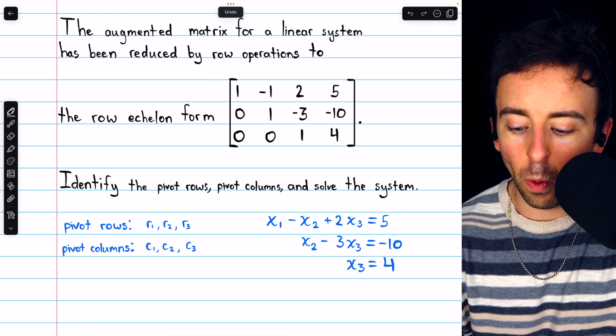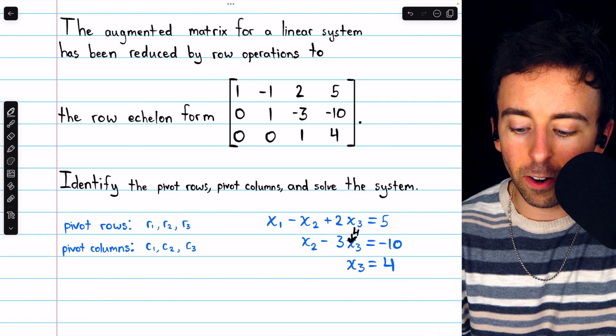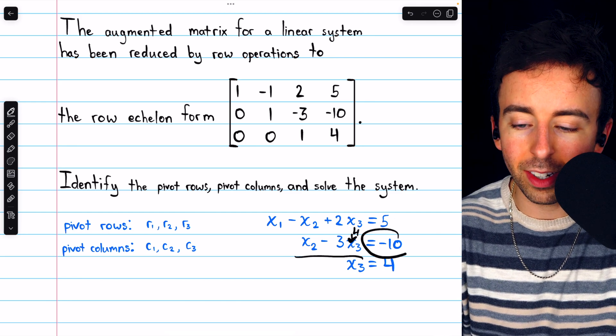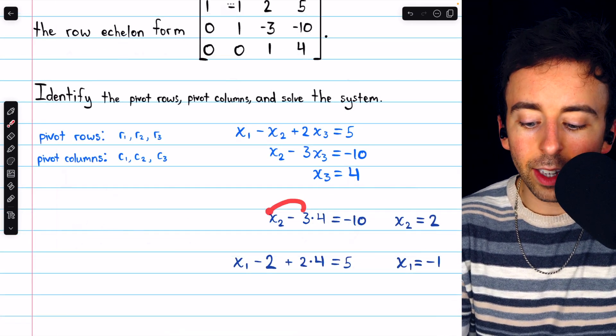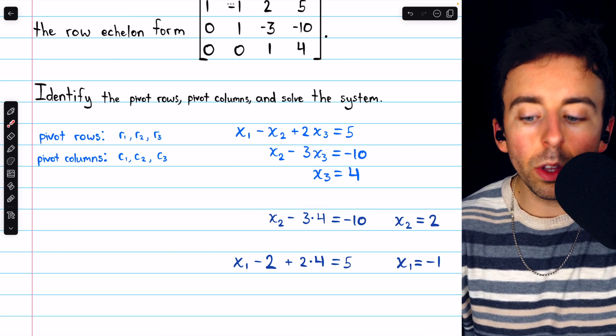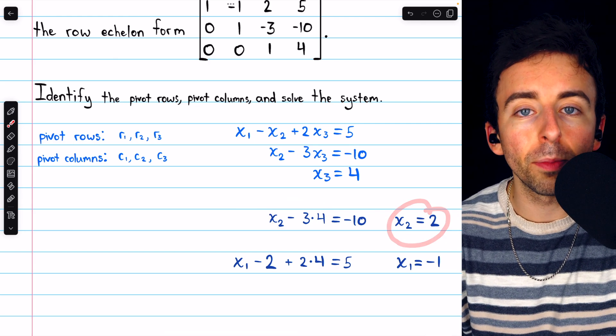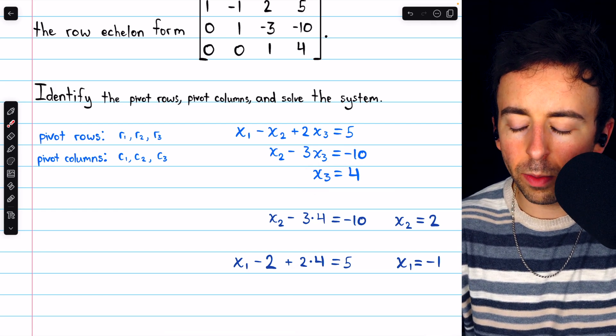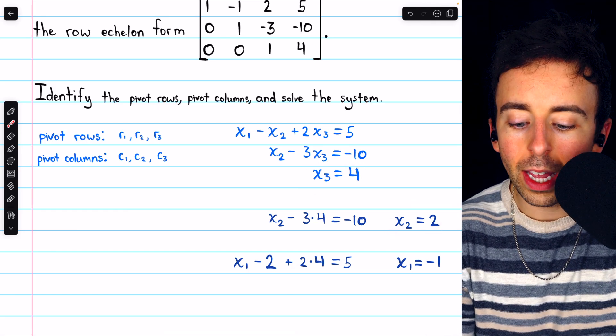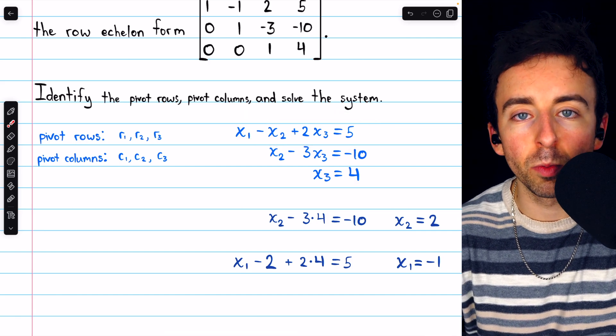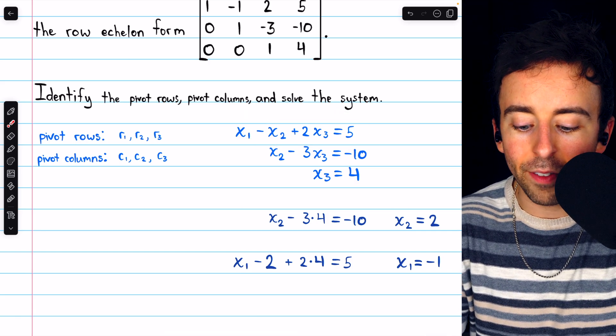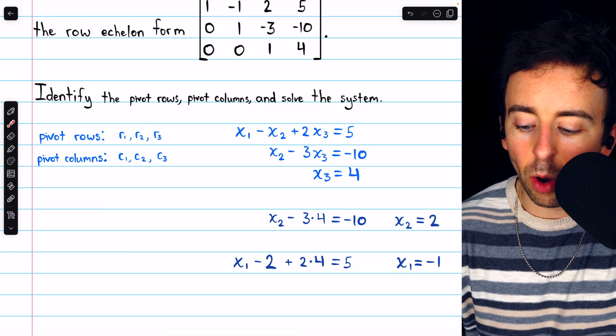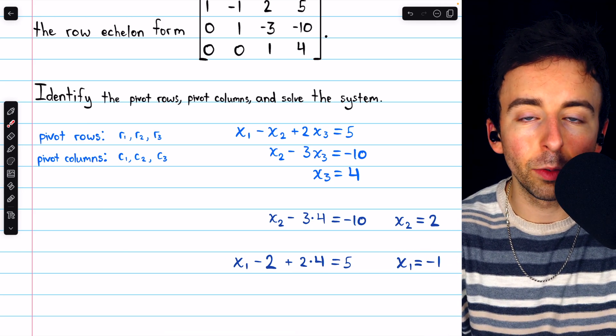And we can then use that to plug it into the previous equation, which corresponded to row 2. Since x3 equals 4, I can plug that in here, to have that x2 minus 12 must equal negative 10. Since x2 minus 12 equals negative 10, we find that x2 equals positive 2. Now we can plug x3 equals 4 and x2 equals 2 into the equation which came from row 1. Thus we have that x1 minus 2 plus 2 times 4 equals 5, and so x1 must equal negative 1.